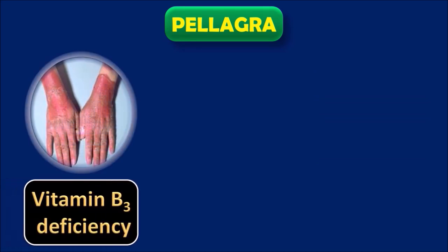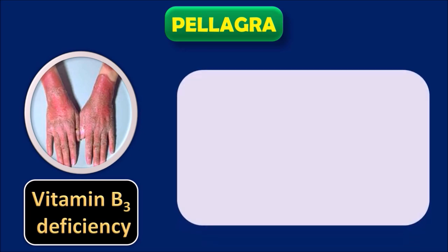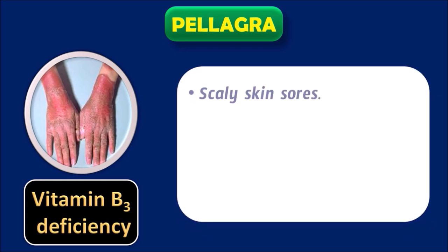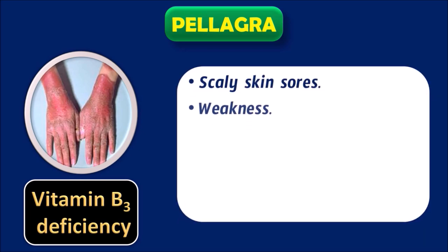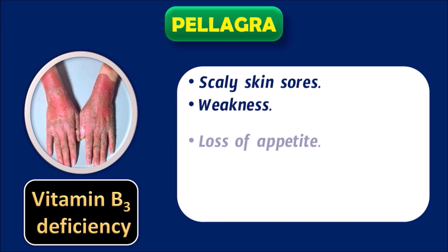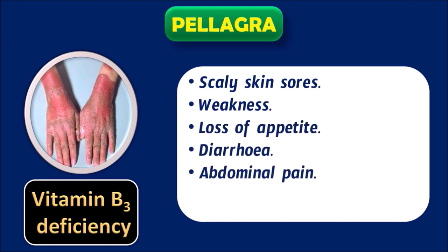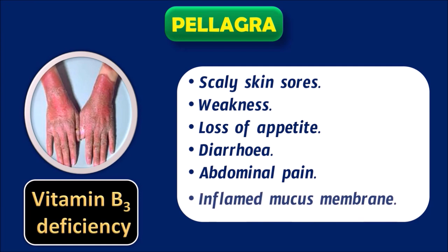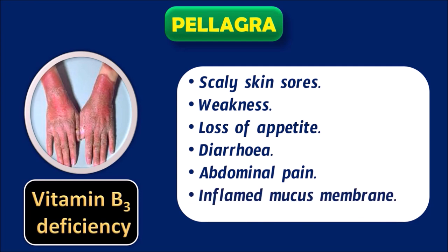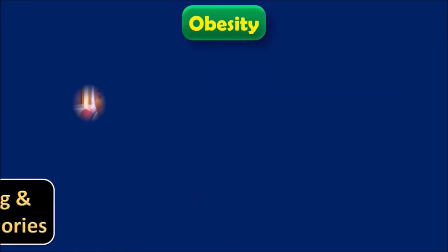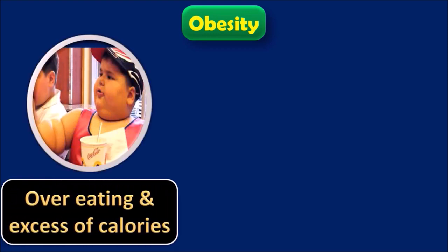Pellagra is a disease caused due to Vitamin B3 deficiency. The symptoms are: scaly skin sores, weakness, loss of appetite, diarrhea, abdominal pain, and inflamed mucous membrane.